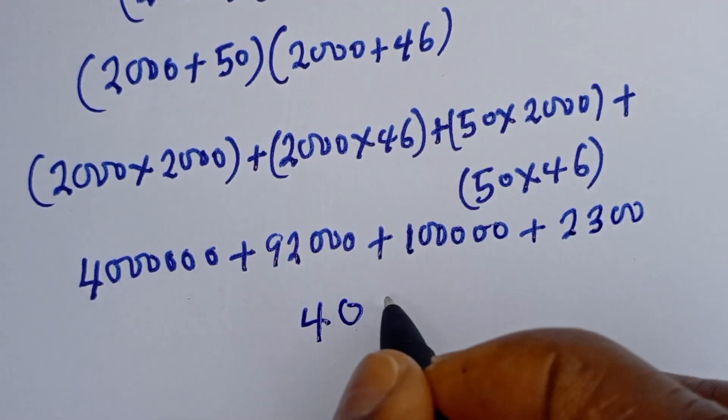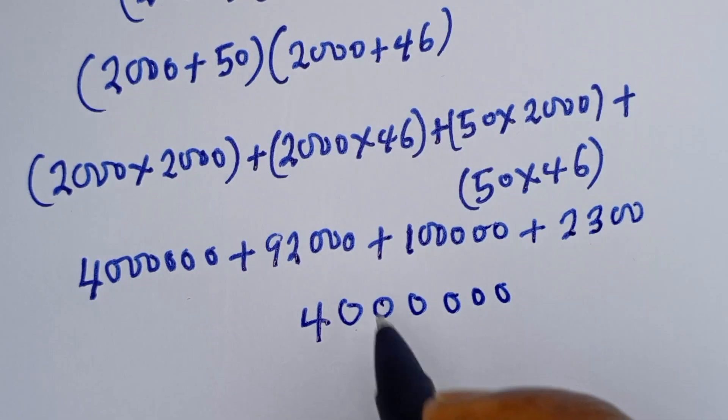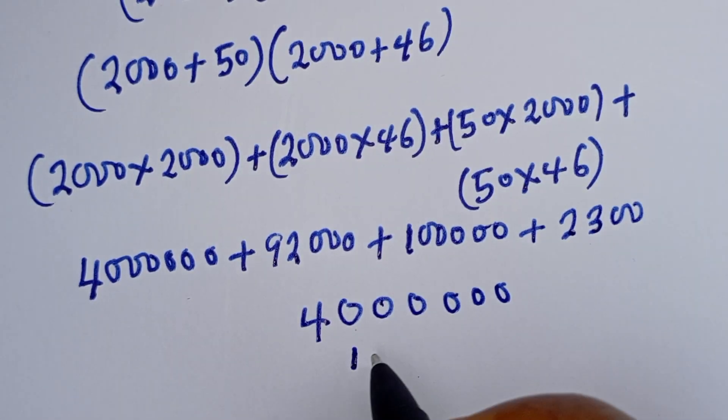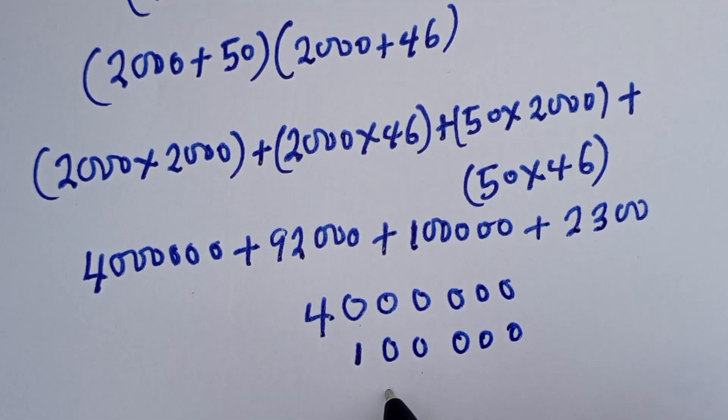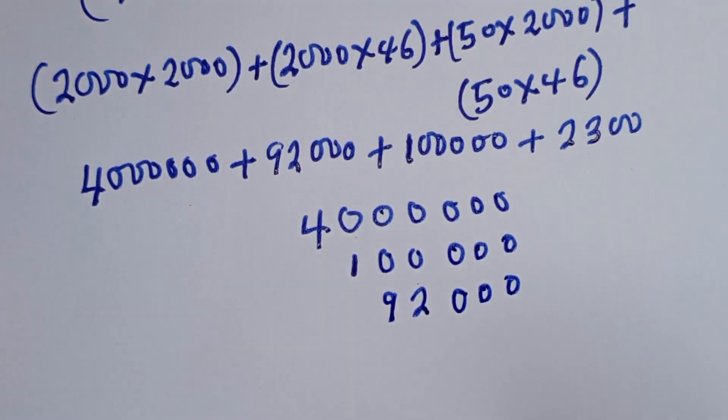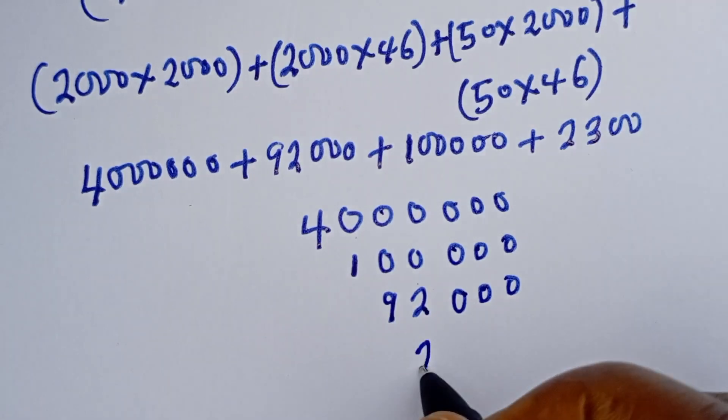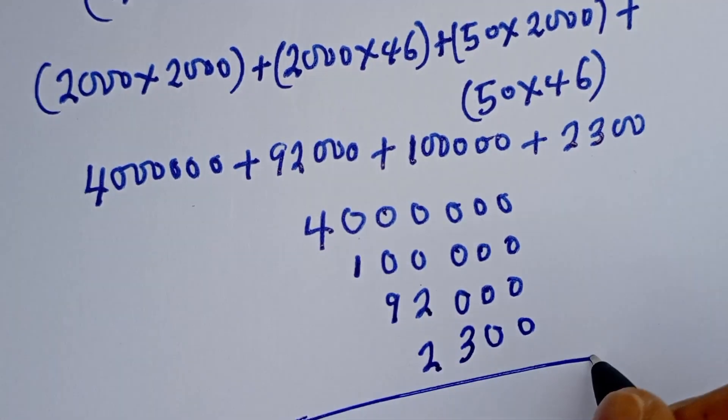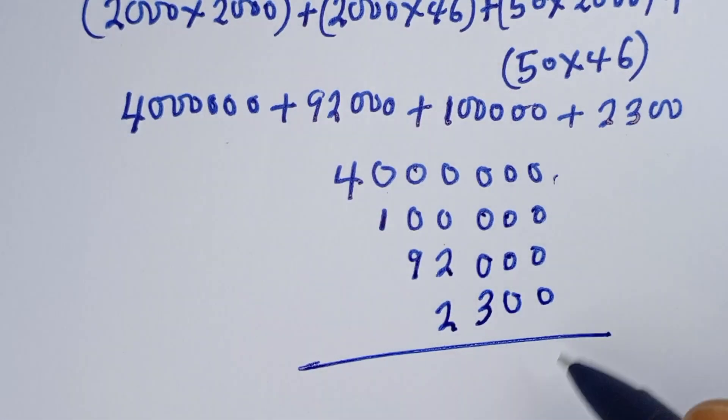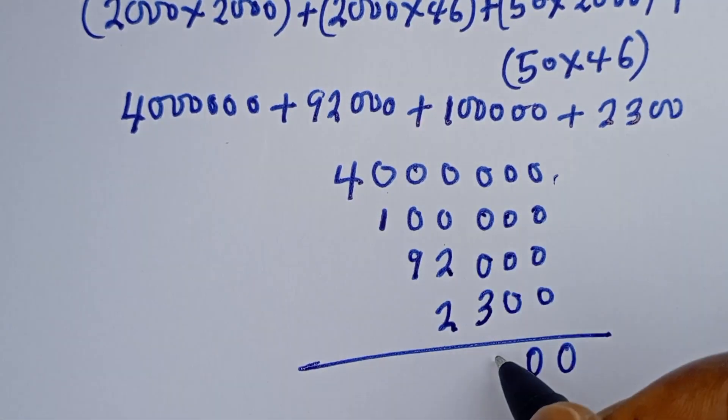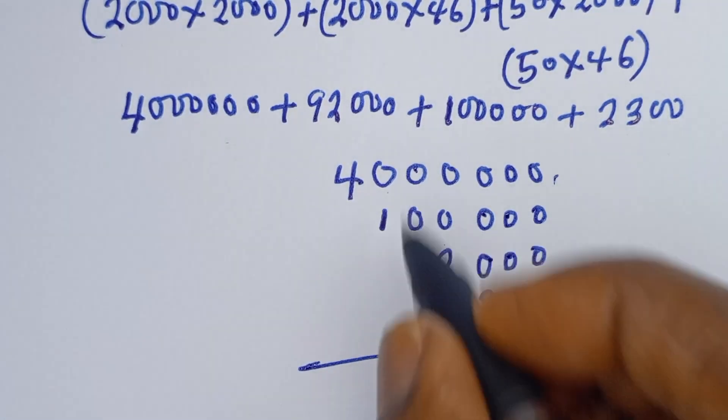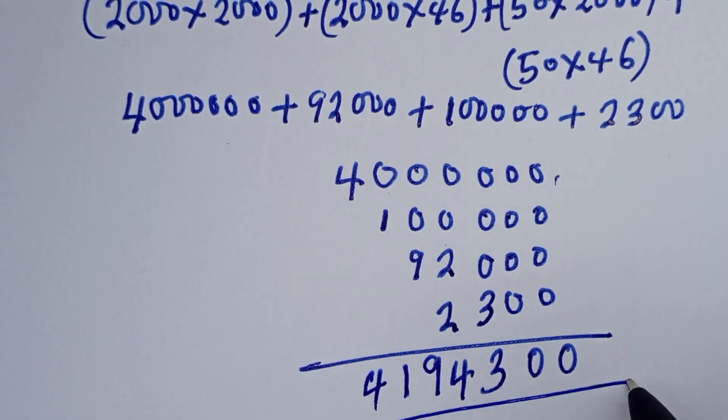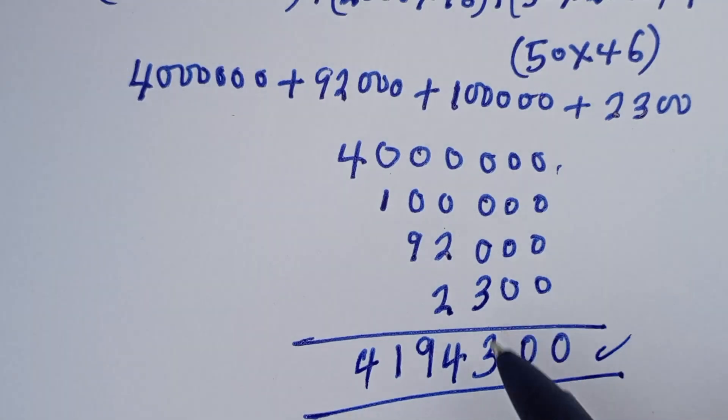Now let's add everything together. We have 4,000,000, then 100,000, then 92,000, and 2300. This gives us 4,194,300.